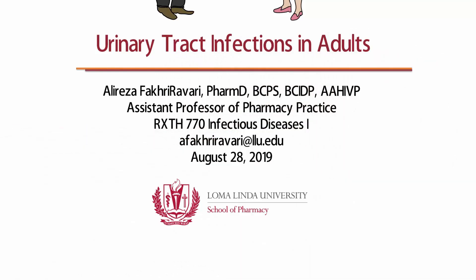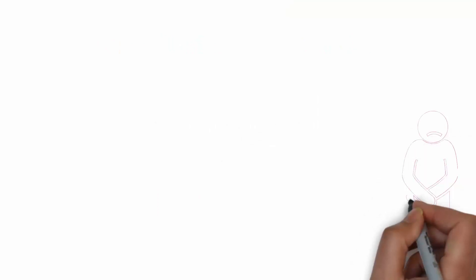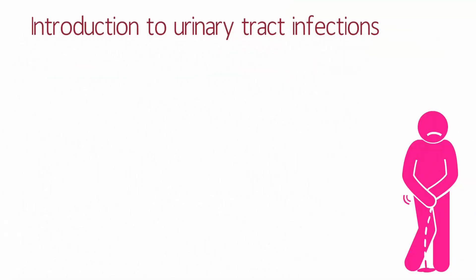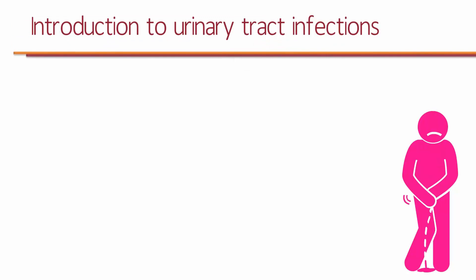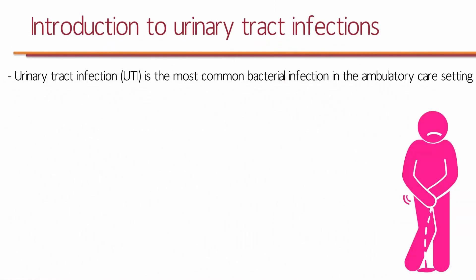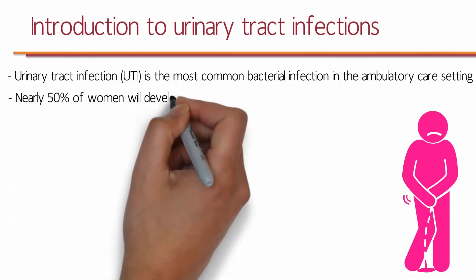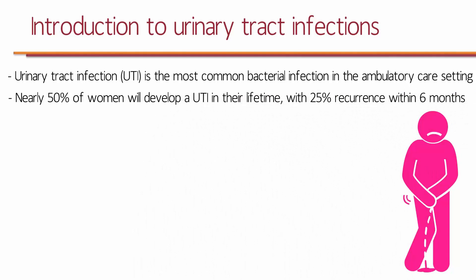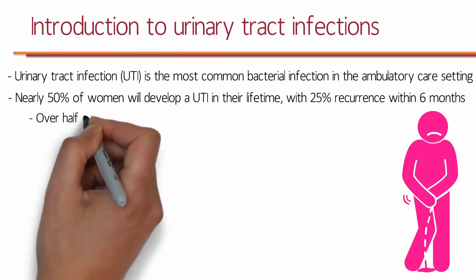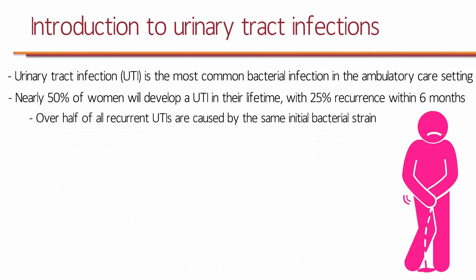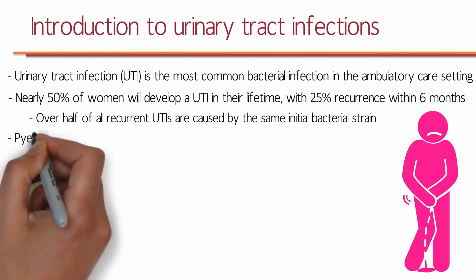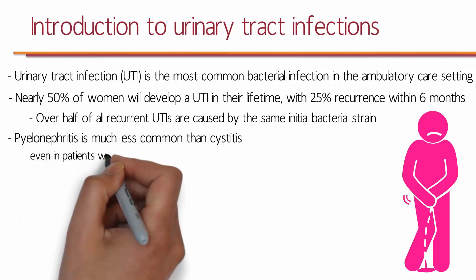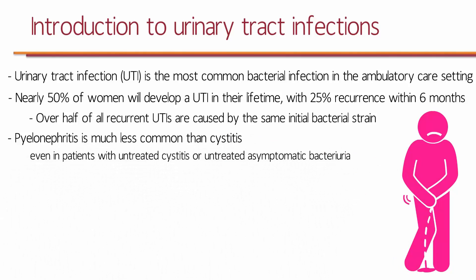I'm Dr. Fakirabari and this is Urinary Tract Infections in Adults. The basics are so important. Urinary tract infection is the most common bacterial infection in the ambulatory care setting in the United States. Nearly half of females will develop a UTI in their lifetime, with 25% recurrence within 6 months. Over half of all recurrent UTIs are caused by the same initial bacterial strain that caused the first infection. Pyelonephritis is much less common than cystitis, even in patients with untreated cystitis or untreated asymptomatic bacteriuria.